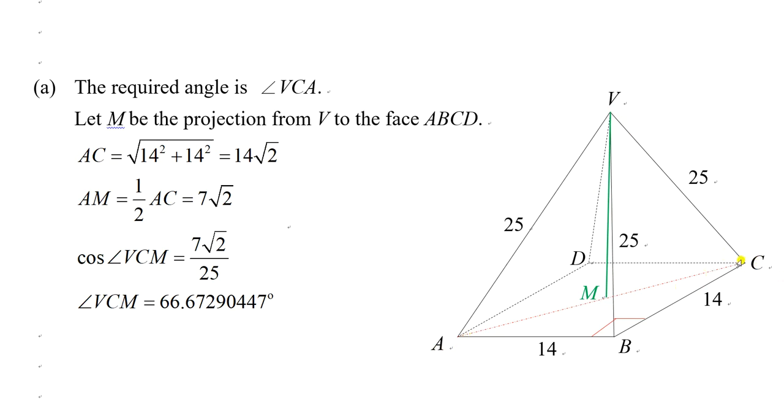By using the right angle triangle ABC, AM equals half of AC equals 7 root 2. Therefore, CM will also equal AM, which is 7 root 2.